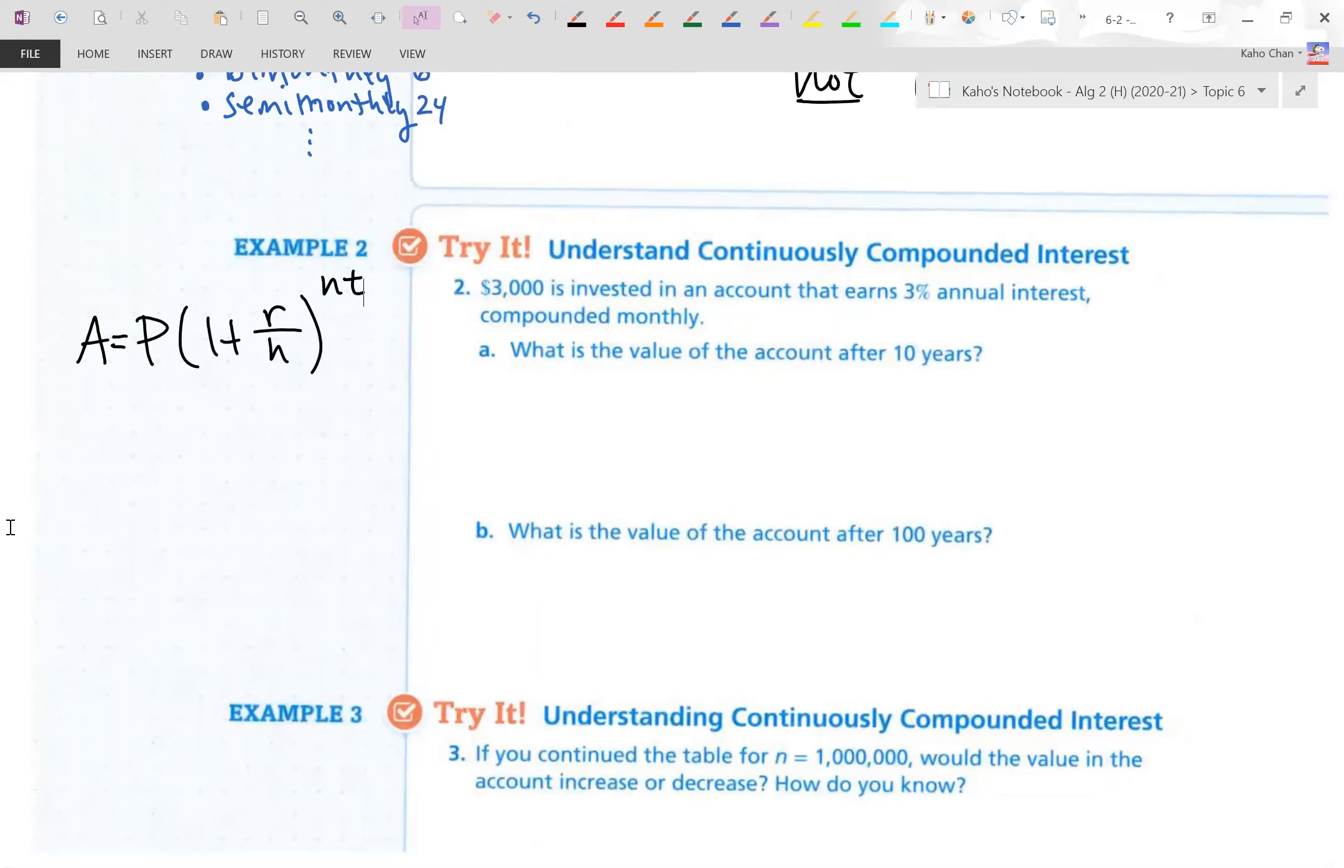There's a typo. The word continuously should not be there. That's saved for number three. Number three is continuously, but number two is not continuously. Here we go. Example two. $3,000 is invested in an account that earns 3% annual interest rate compounded monthly. What is the value of the account after 10 years?